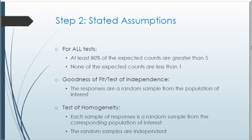Now step two — stating and checking our assumptions. For all three chi-squared tests, two assumptions are the same: at least 80% of the expected counts are greater than five, and none of the expected counts are less than one. For goodness of fit or test of independence, one more assumption is that the responses are a random sample for the population of interest. For tests of homogeneity, we additionally require that each sample of responses is a random sample for a corresponding population of interest, and that each of those samples is independent from one another.